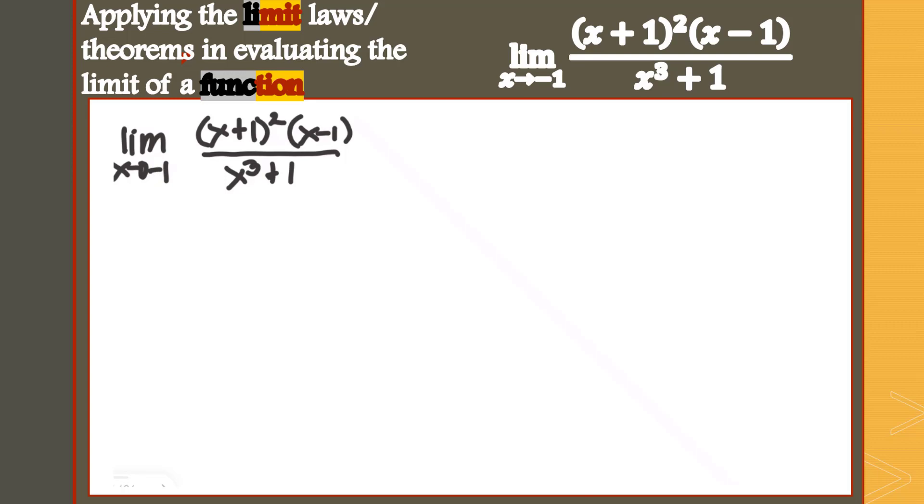This is to illustrate the result using the limit theorems. If you try the limit of your denominator alone, x³+1 as x approaches negative 1, you will have the cube of negative 1 plus 1, which is negative 1 plus 1. You will get 0.